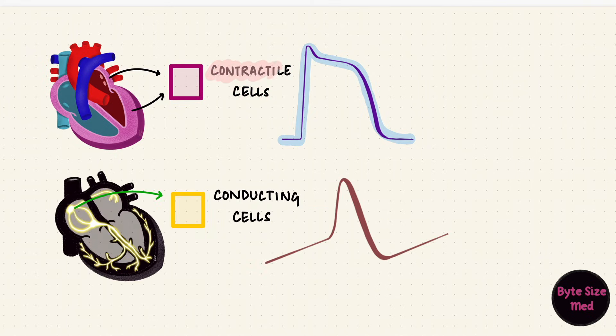But like I said, this was in contractile cells. Conducting cells, like in the sinoatrial node, have something a little different. And we'll look at that in part 2.